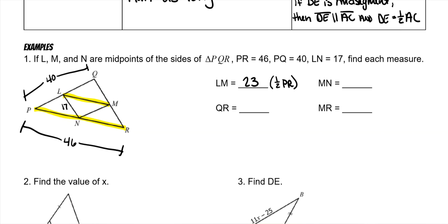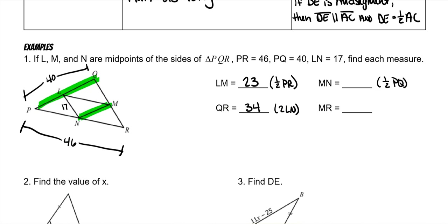QR is double of what it's parallel to, so it's 2 times LN. LN is 17, so when you double it, it's 34. MN is here, which will be half of PQ, which means it is 20.